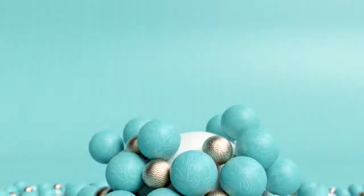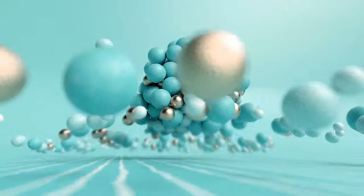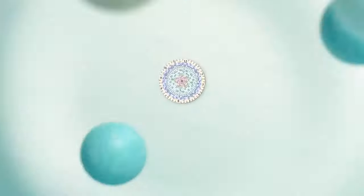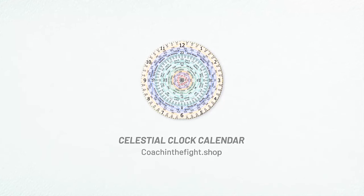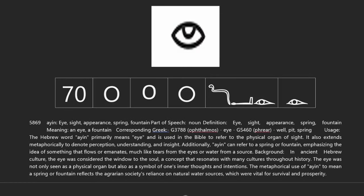A little bit of insight brings us to the next letter, which is the Ayin. This one is commonly known. Strong's number 5869, with the letters Ayin, Yad, and Nawwana. It's a noun and it means eye, or sight, appearance. You can see the eye in the symbol — it is simply an eye. But you see down there, it says Ayin can refer to the spring or fountain, emphasizing the idea of something that flows or emanates.